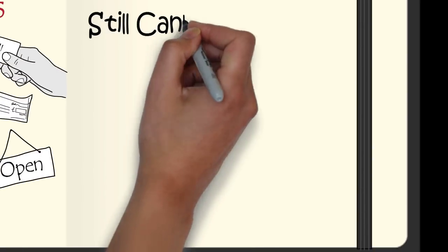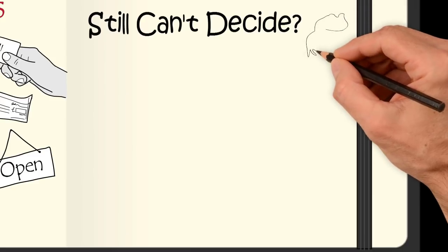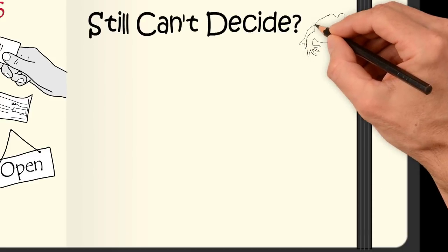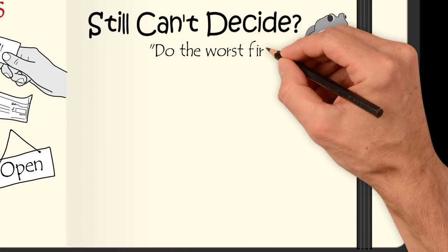At this point, if you still can't decide between two or three frogs, simply focus on the one frog that you've most avoided eating. Brian Tracy says, eat the biggest and ugliest frog before anything else. Do the worst first.